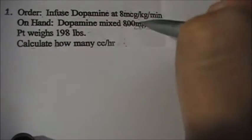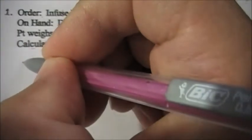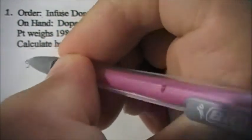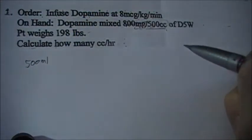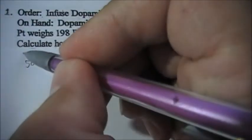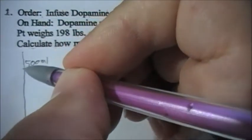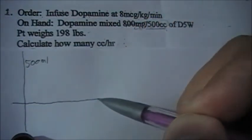Remember we're looking for mls per hour or cc's per hour, so we want to put 500 cc's or 500ml on top. So 500ml that would be on top or 500 cc's. Then we're gonna draw a vertical line like this.